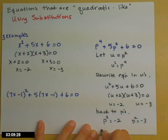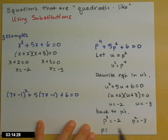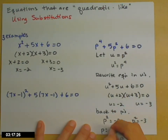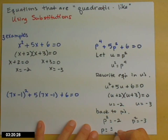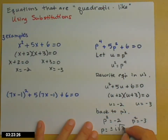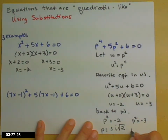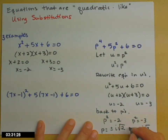Replacing u with p squared: p² = -2 and p² = -3. Square-rooting both sides, with plus or minus, there's a negative under the radical, so we bring that out as i. The solutions are p = ±i√2 and p = ±i√3.